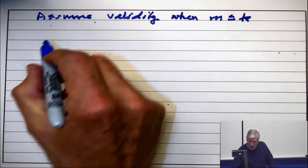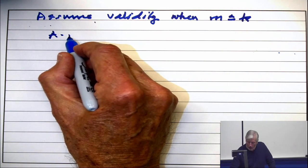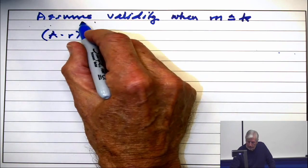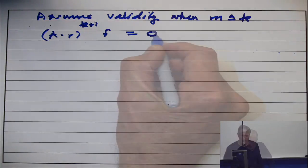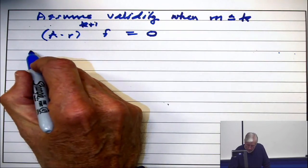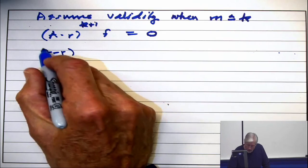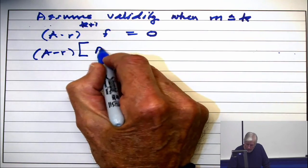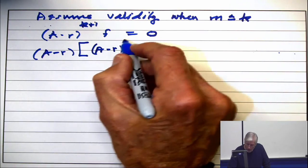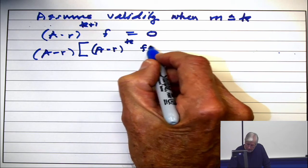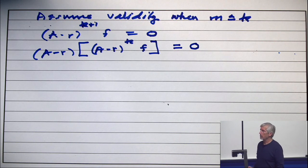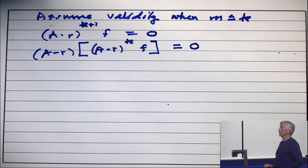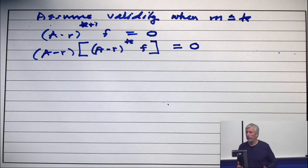And then we apply (a-r) to the k+1 on a function f and we get 0. So this means (a-r) applied to (a-r) to the k on f is 0. So I'm simply breaking off one of the (a-r) operator terms.